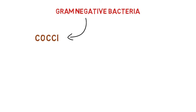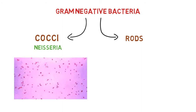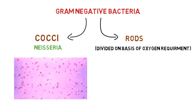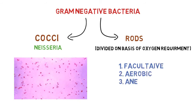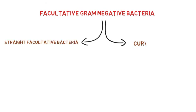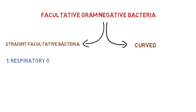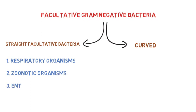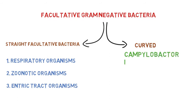Gram-negative classification includes a lot of bacteria and contains two groups: Gram-negative cocci and Gram-negative rods. Neisseria is a Gram-negative diplococci shaped bacteria. Gram-negative rods are divided according to their oxygen needs into facultative organisms, aerobic organisms, and anaerobic organisms. Facultative bacteria are straight as well as curved in shape. Curved facultative rods include Campylobacter, Helicobacter, and Vibrio.